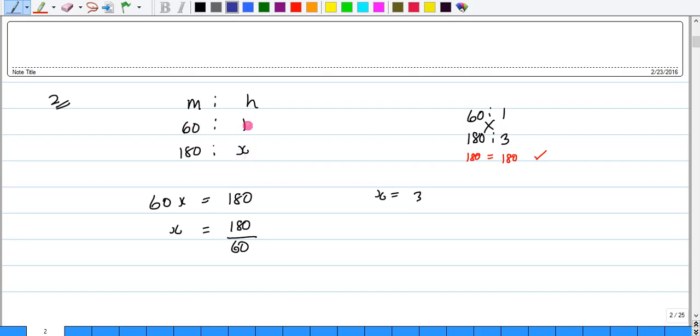So we could find the cross products. So 60 times x would give us 60x, and 180 by 1 would give us 180.